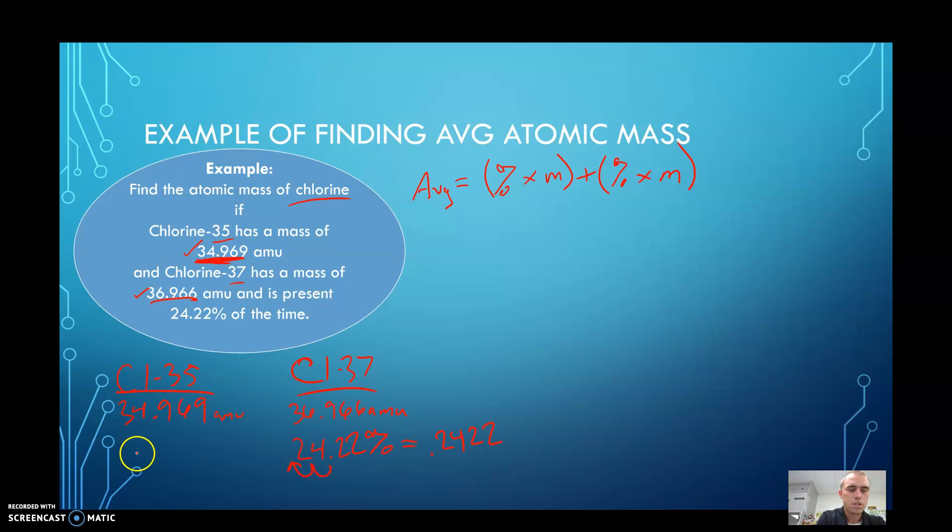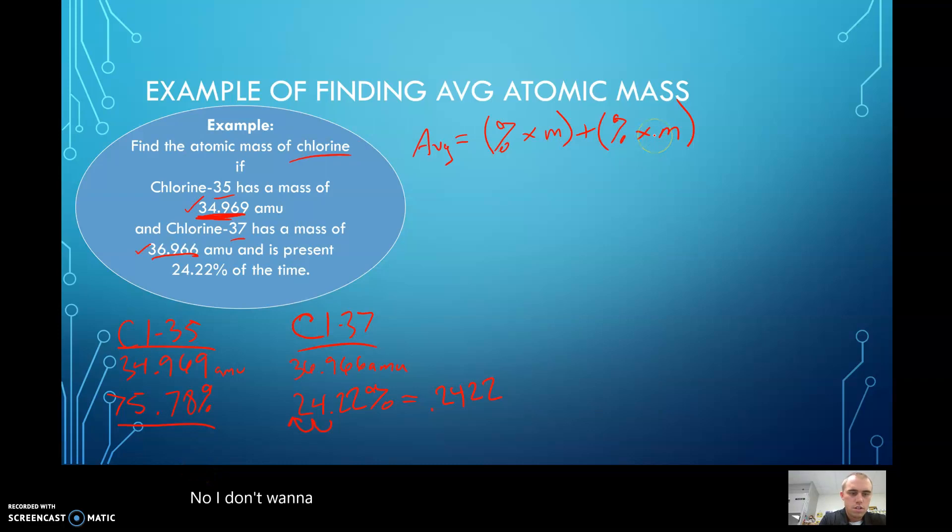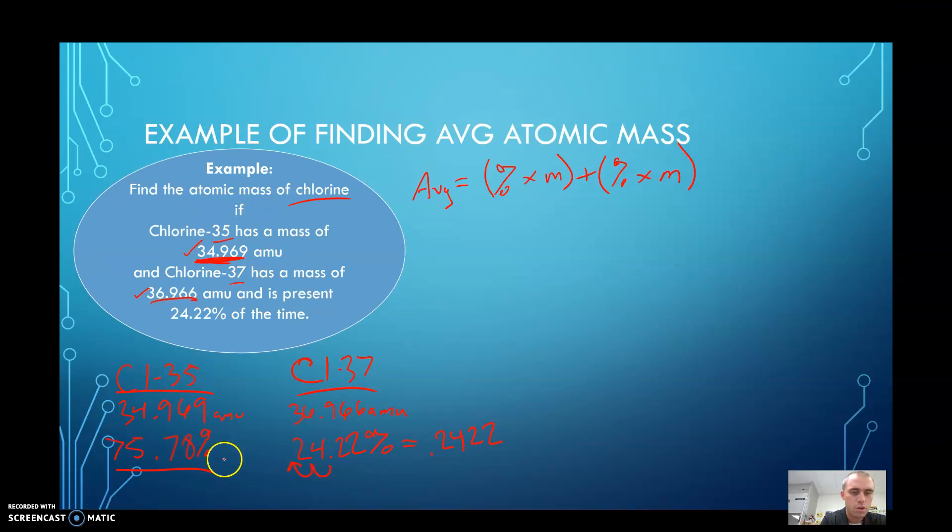How do I find the percentage over here? Percentages always add up to 100. So I need to take 100% minus 24.22%. When you do that, you get 75.78%. To change this to a decimal, it becomes 0.7578.